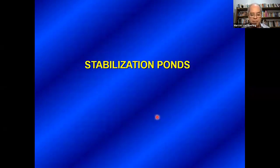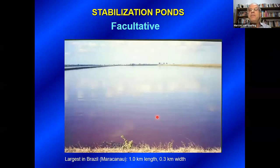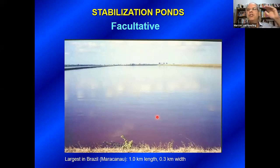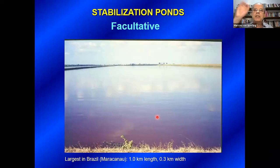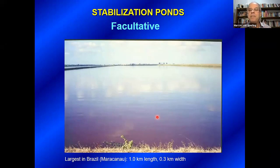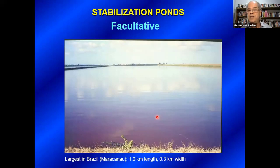Facultative ponds are the most widely used variant, not only in Brazil but in many, many countries. In the United States, there is a fantastic map showing 8,000 stabilization ponds spread all around the country from east to west, from south to north — so regardless of climatic conditions, they are being used. In Australia, they are the dominant treatment process. In France, there are more than 3,000 stabilization ponds. They are a very simple treatment process, limited in their capacity for removing organic matter, but able to remove many pathogenic organisms. The major problem is the large land requirements.